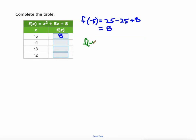F at negative 4. Negative 4 squared is 16. 5 times negative 4 is negative 20, plus the 8. So to me I look at that as 16 and 8 makes 24, minus the 20 is 4.